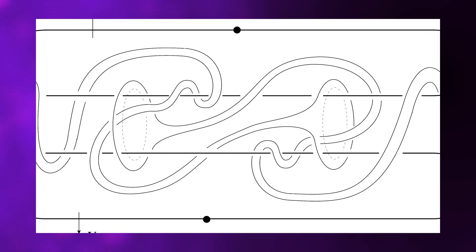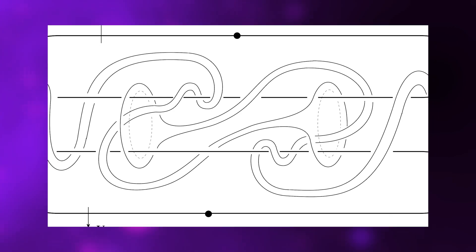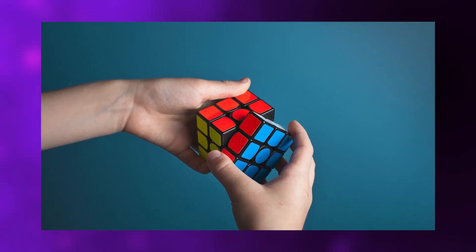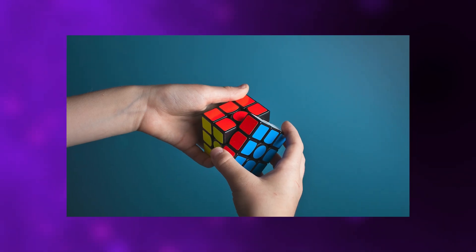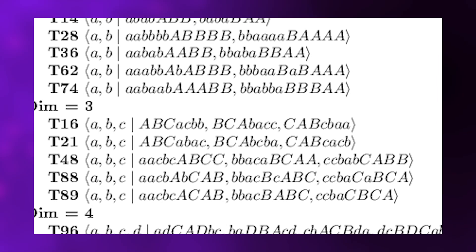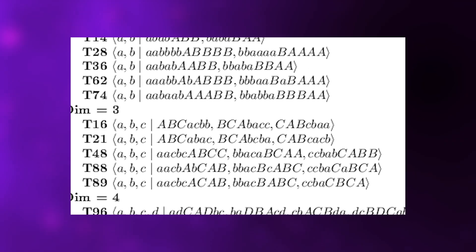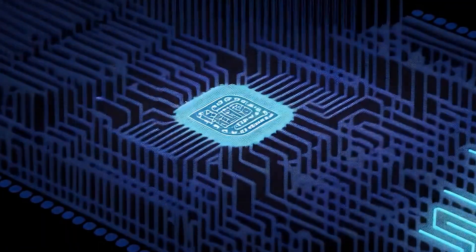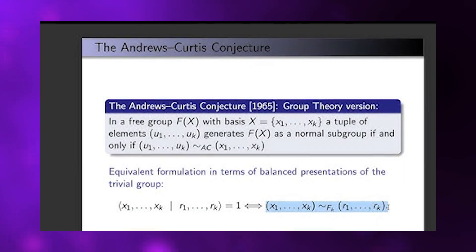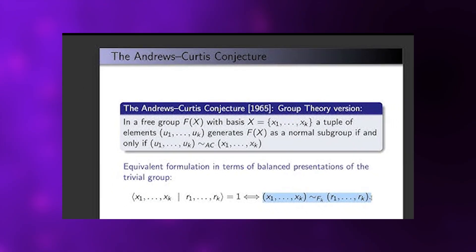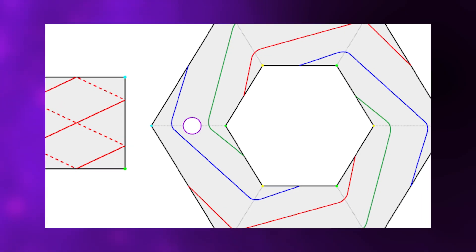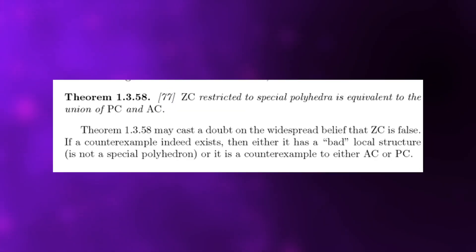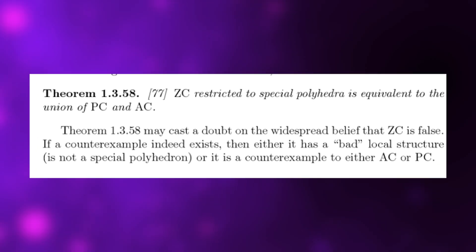At the center of this story is something called the Andrews-Curtis Conjecture. It was introduced in 1965, and the easiest way to understand it is to think of a giant, abstract Rubik's cube, except instead of colors and physical turns, you're dealing with algebraic expressions, and you're only allowed a small set of legal moves to simplify them. The conjecture says that no matter how complicated your starting puzzle is, there should be some sequence of moves that simplifies it back down to a basic standard form. Sounds simple enough, but mathematicians kept finding strange puzzles that didn't seem to simplify. These became known as potential counter-examples.